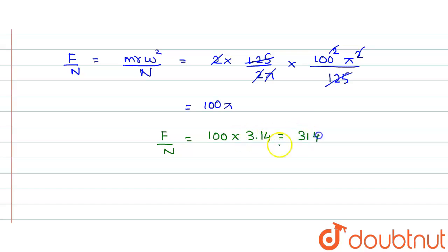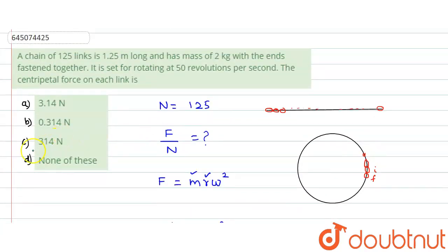Now what is the value of π? π value is 3.14. So F divided by N would be equal to 100 × 3.14. So this would be equal to 314 newtons per link.